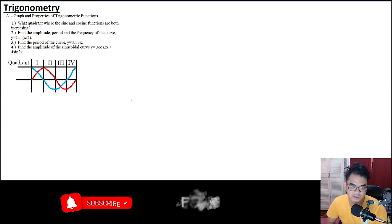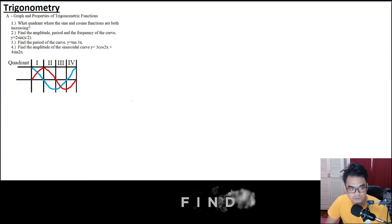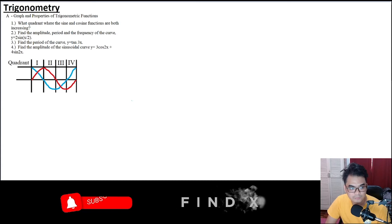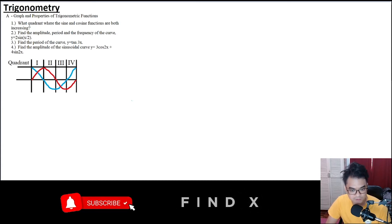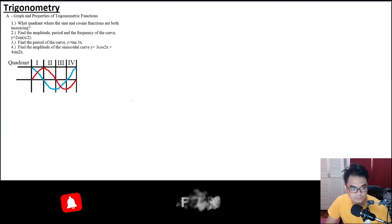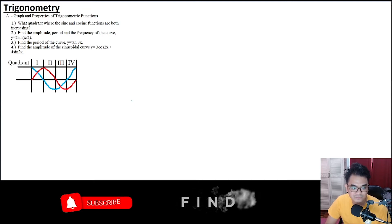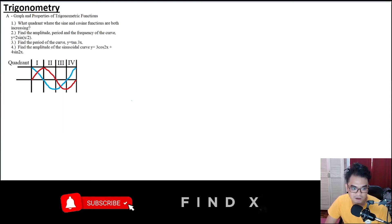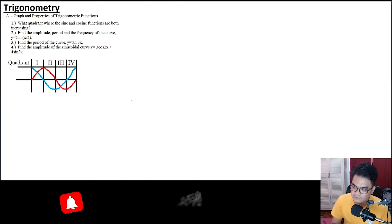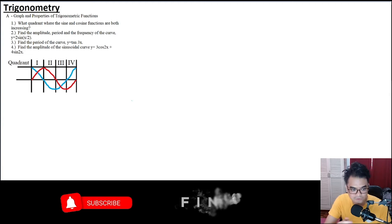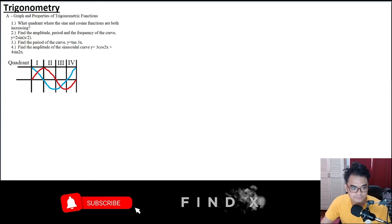For number one, the first topic is graphs and properties of trigonometric functions. The problem asks: in what quadrant are the sine and cosine functions both increasing? What the problem is asking is basically where sine and cosine are both increasing in value. We'll be referring to the graph I made.